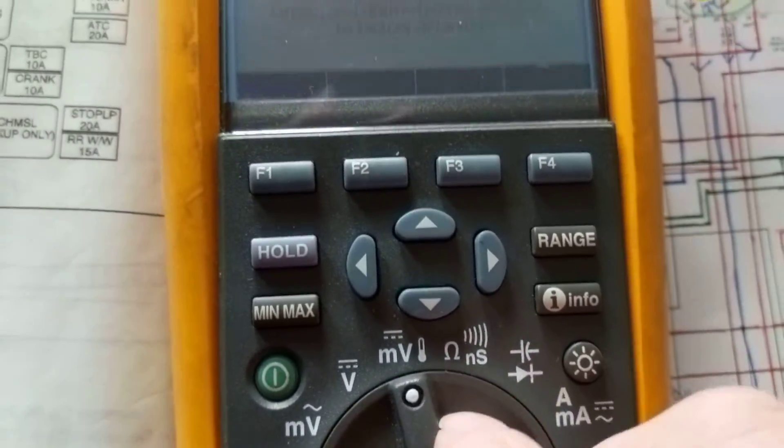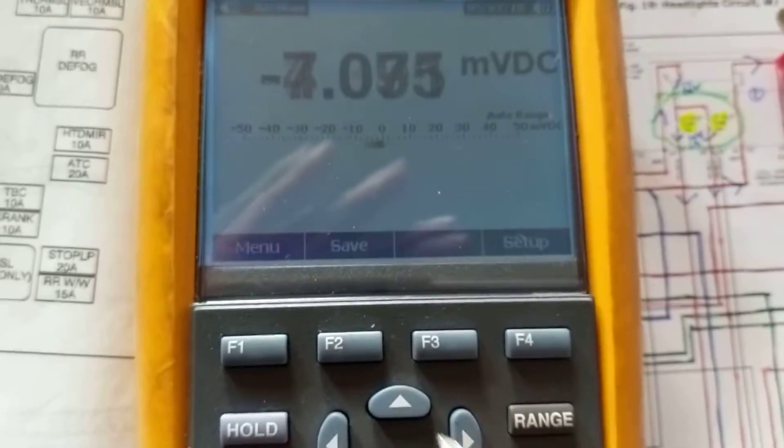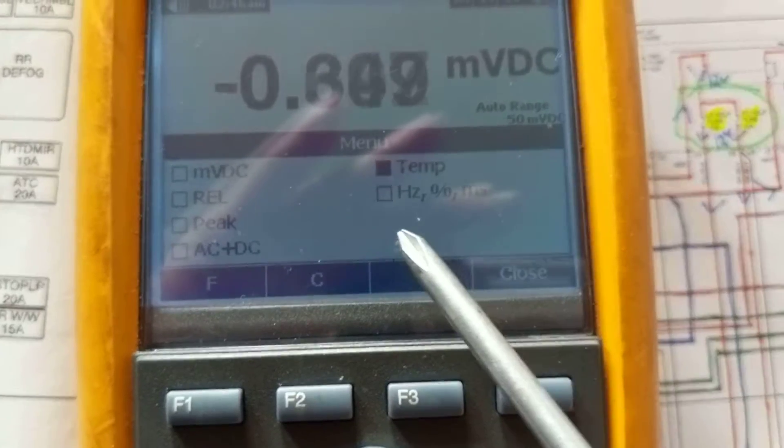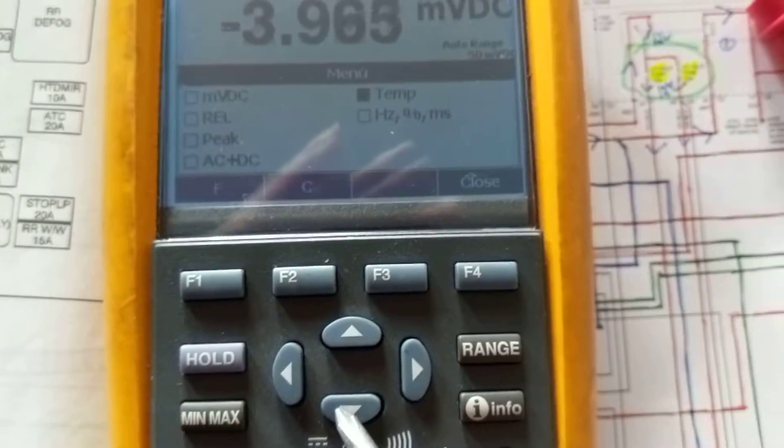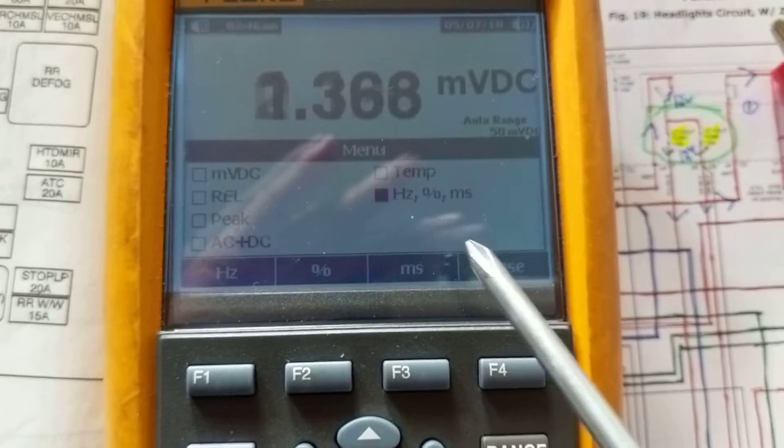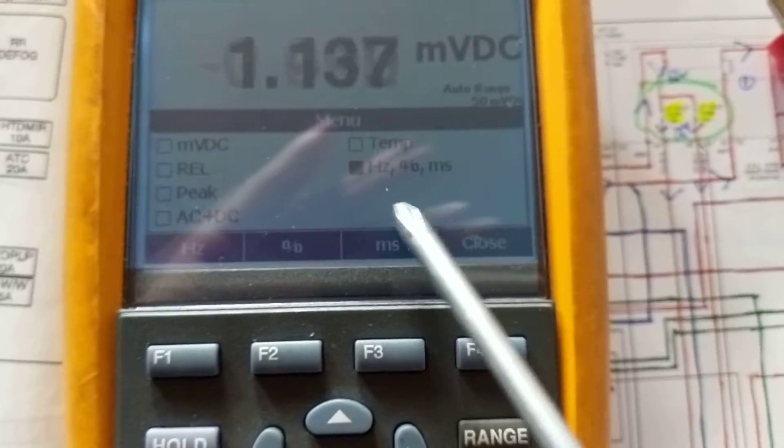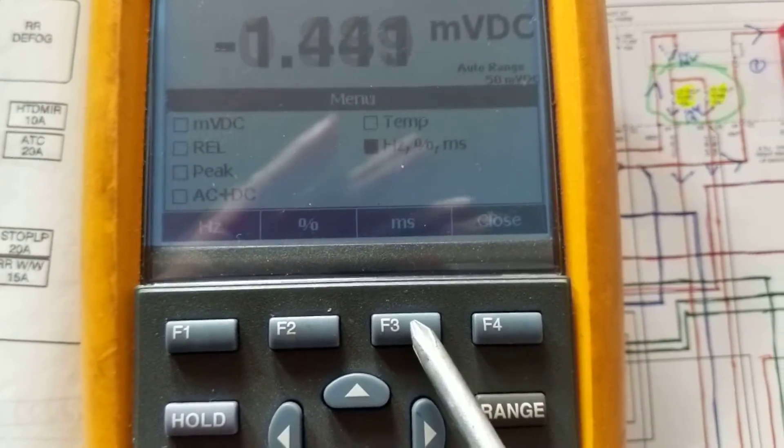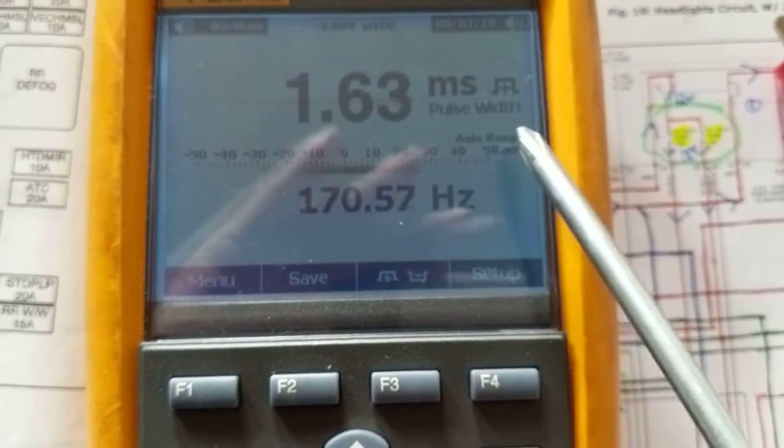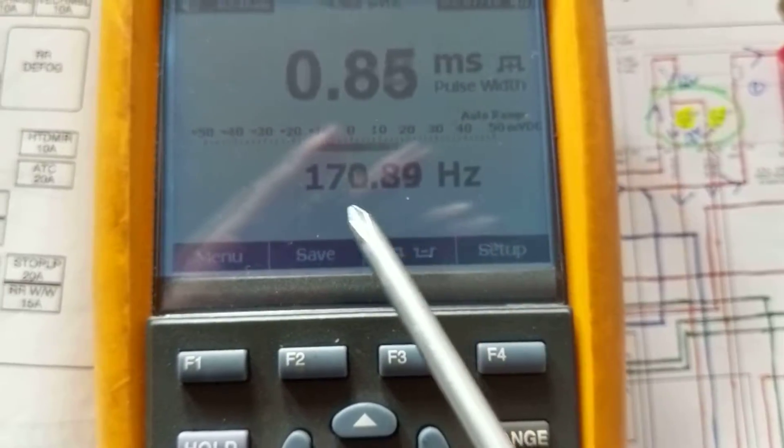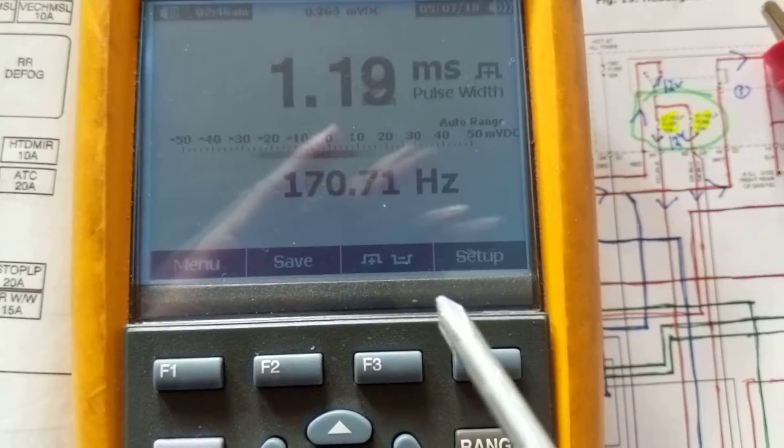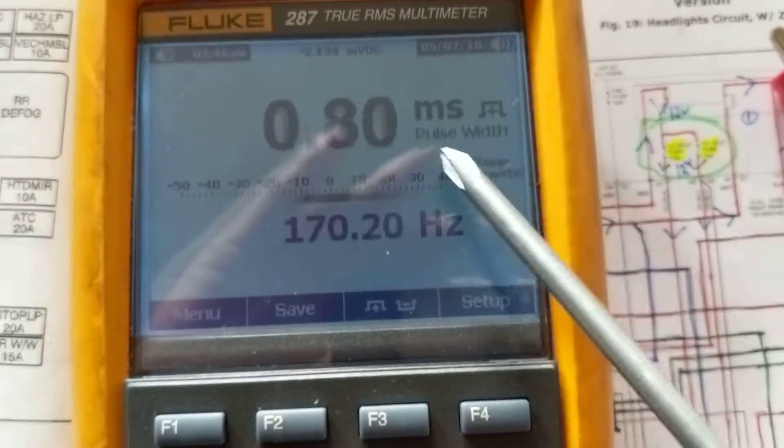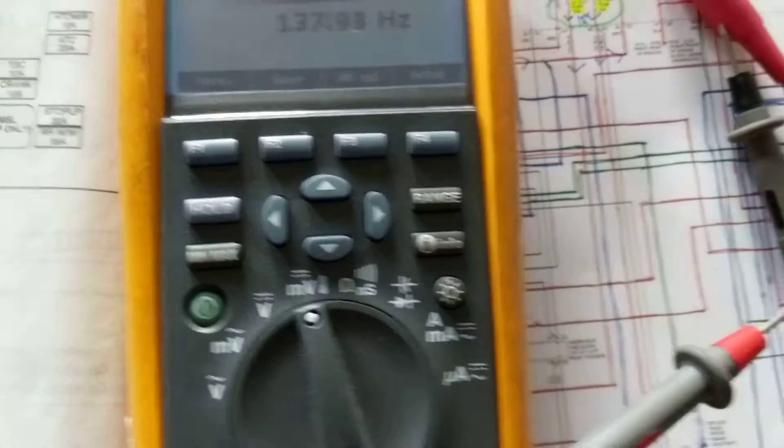You have to move this down, and then you have the choices that are up here: hertz, percentage, duty cycle, milliseconds. It'll give you the milliseconds if you have a pulse. It'll give you the frequency if you want to measure frequency. Sometimes you need it in automotive.